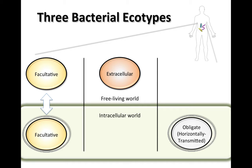Free-living bacteria are solely extracellular — they replicate only in outside environments. When we study obligate intracellular bacteria, they only replicate inside host cells. There are actually features of obligate intracellular bacteria, including whether they're horizontally versus vertically transmitted, that remarkably affect their genomes.